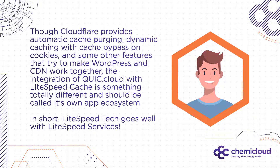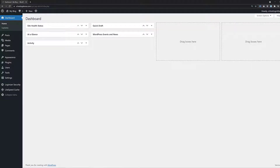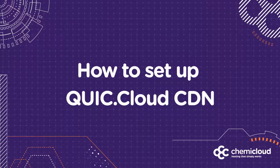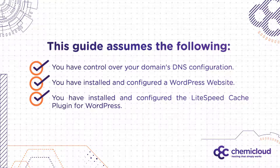In short, Lightspeed technology goes well with Lightspeed services. Now we'll cover how to set up QuickCloud. There are some prerequisites that you should be aware of. This video assumes the following: you have control over your domain's DNS configuration, you have installed and configured a WordPress website, and you have installed and configured the Lightspeed Cache plugin for WordPress.